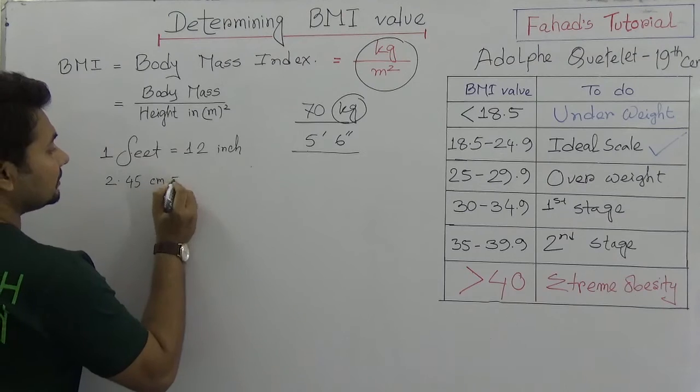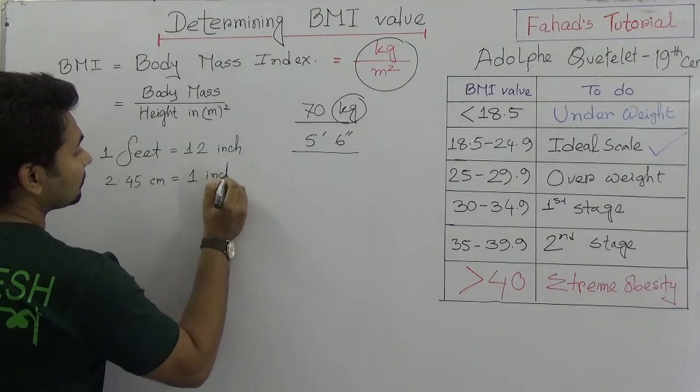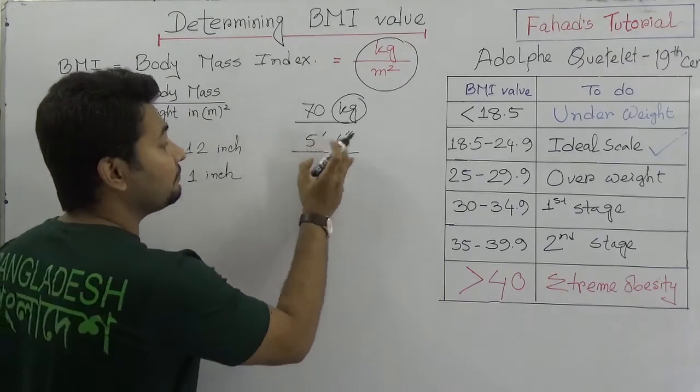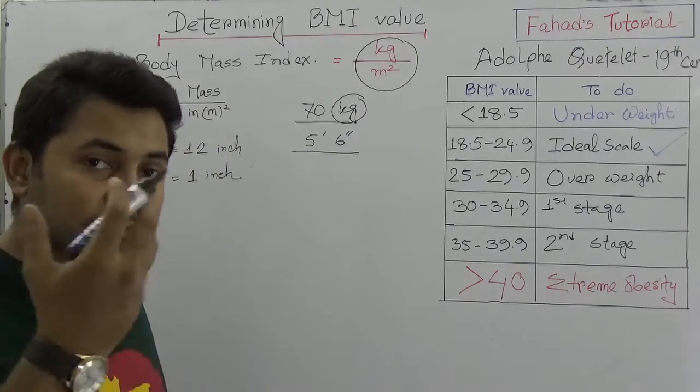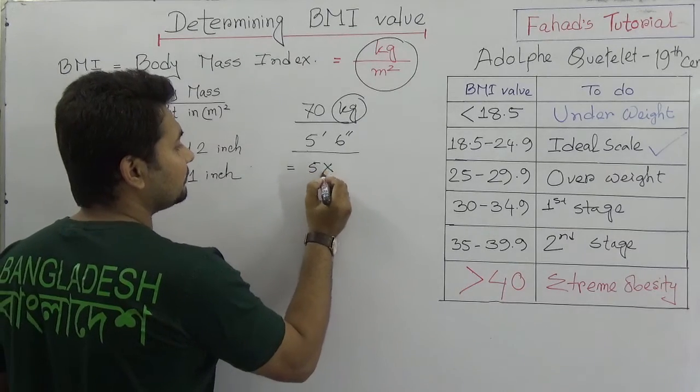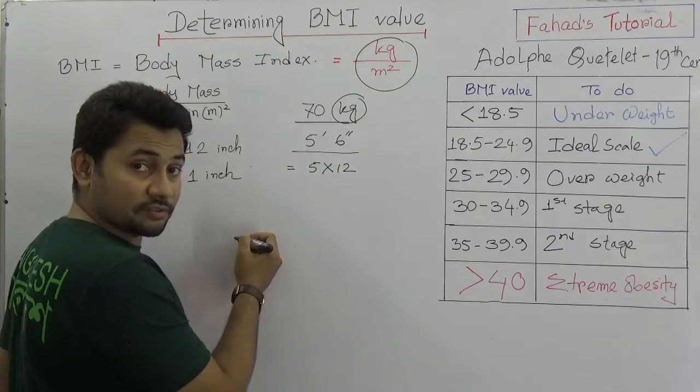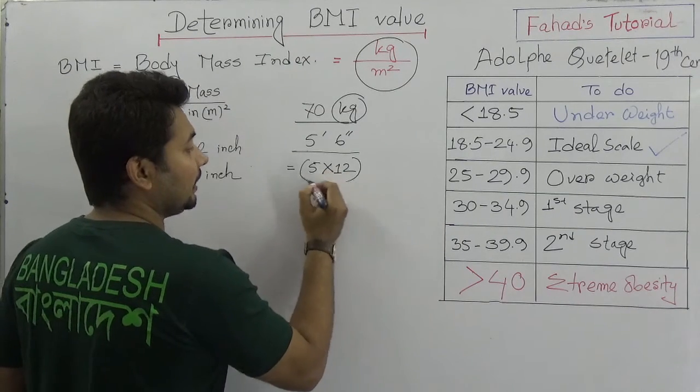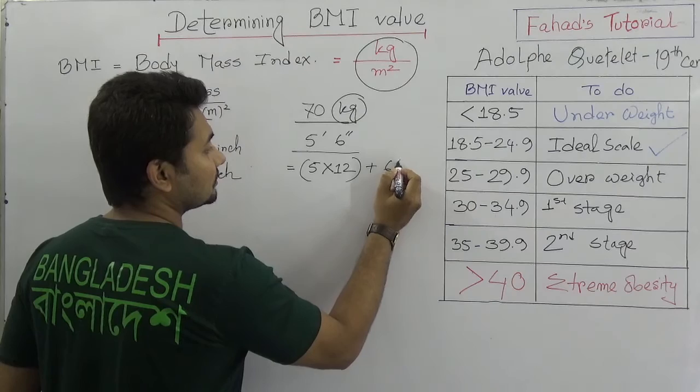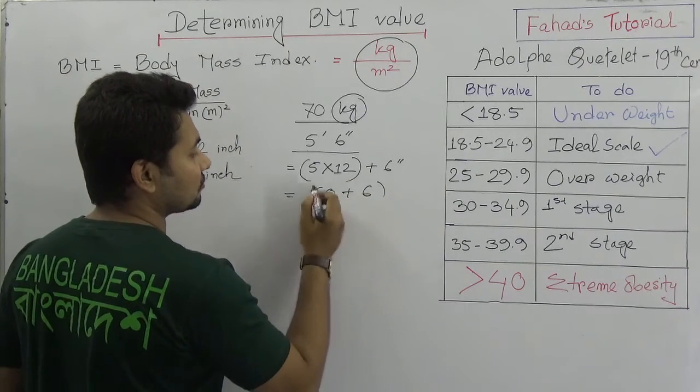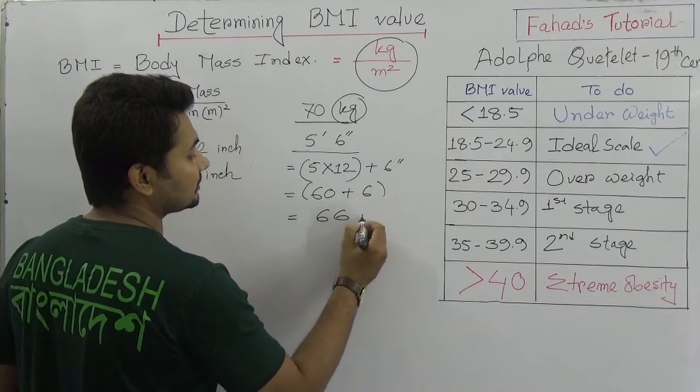So if somebody's height is given 5 feet 6 inches, how to convert it in meter? Think about 5 feet - that is 5 times 12 inches, 5 times 12 inches plus 6 inches. So it's altogether 60 inches plus 6 inches, so that is 66 inches.